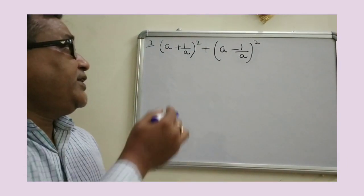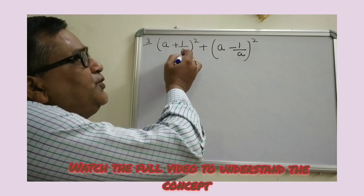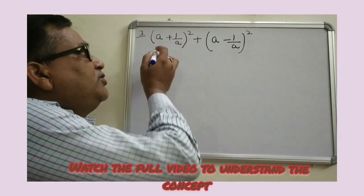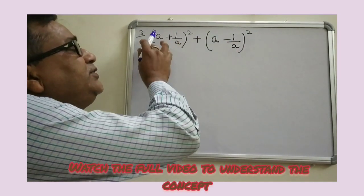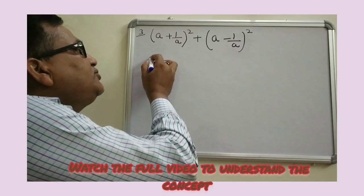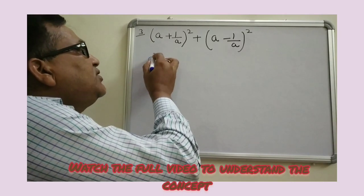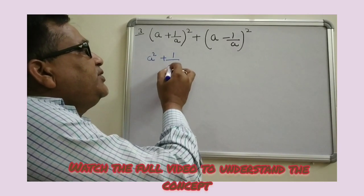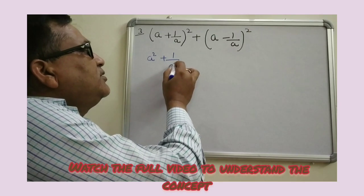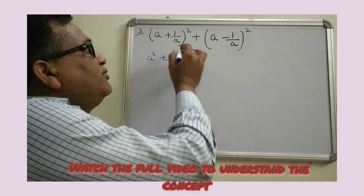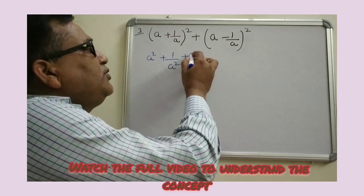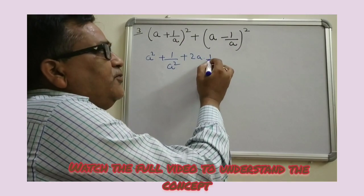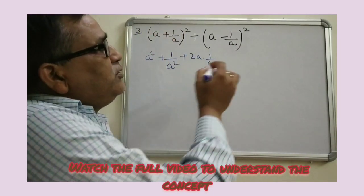The next question is: a plus 1 upon a whole square plus a minus 1 upon a whole square. We expand using the identity. The first part gives a squared plus 1 upon a squared plus 2 into a into 1 upon a.